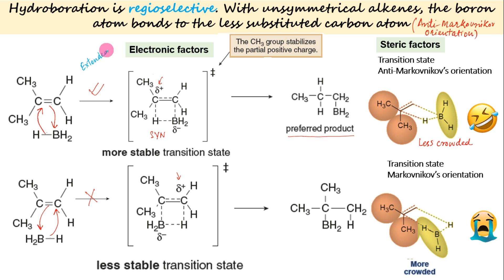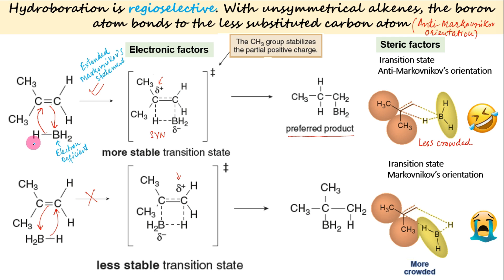Notice that, although this addition produces a product with anti-Markovnikov orientation, the addition still proceeds via the extended Markovnikov's statement — that is, the electron-deficient boron bonds to the less-substituted carbon, developing partial positive charge on the more-substituted carbon. There is no anti-Markovnikov's rule, only anti-Markovnikov's orientation.